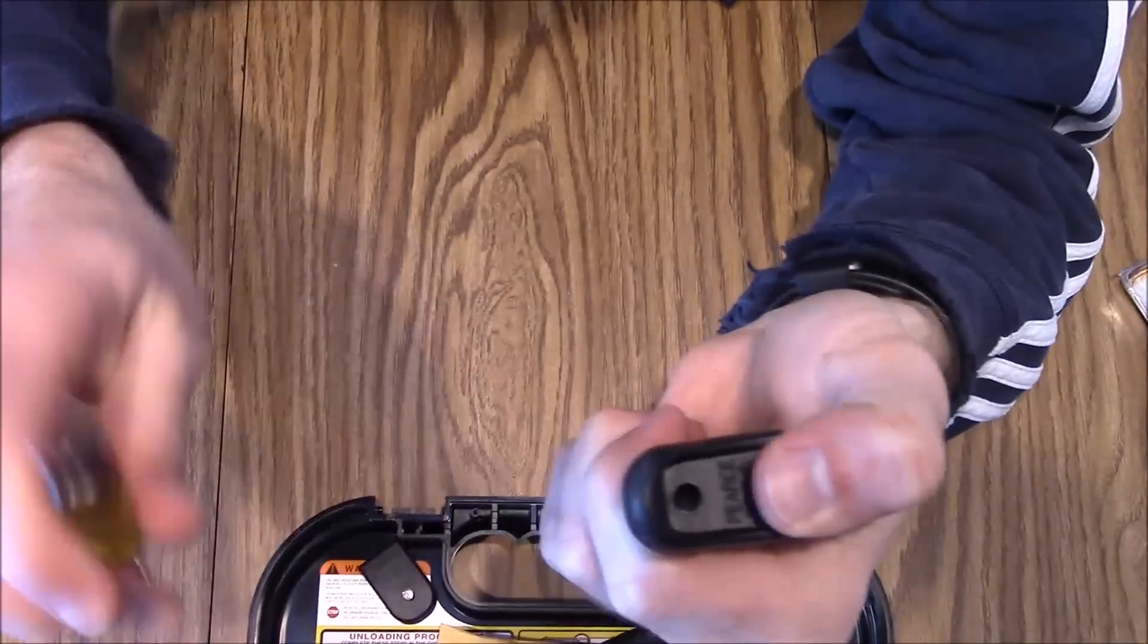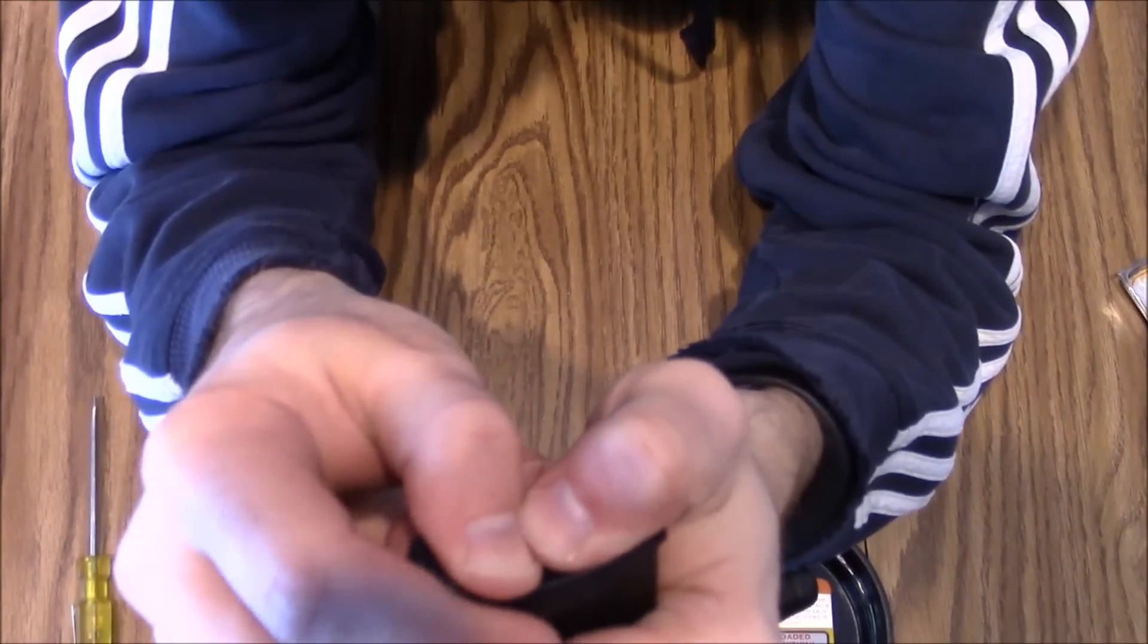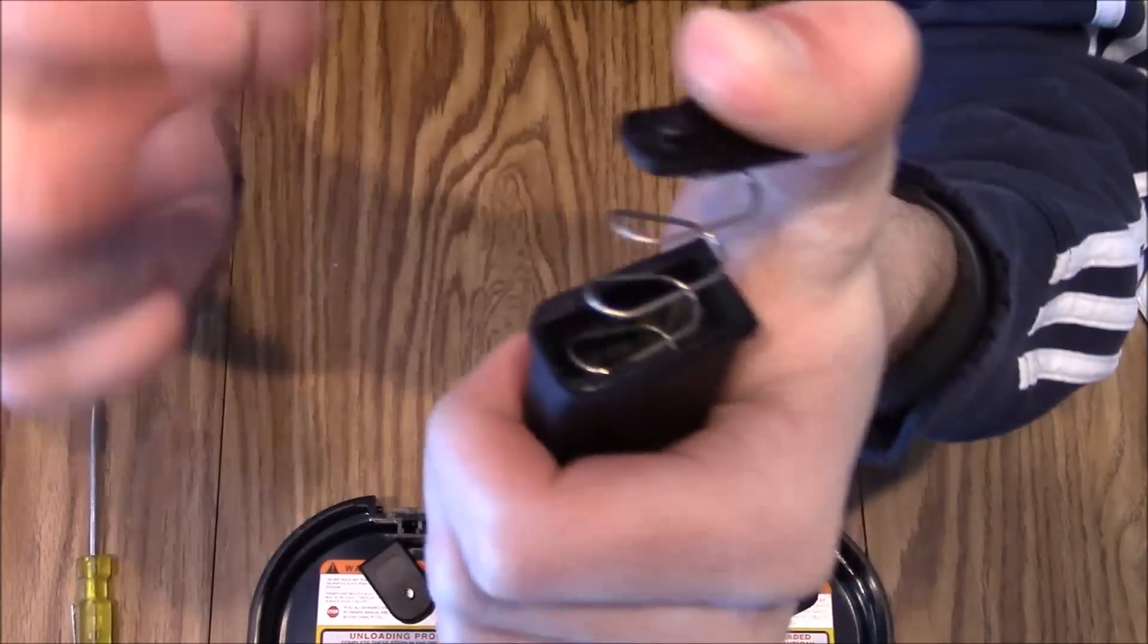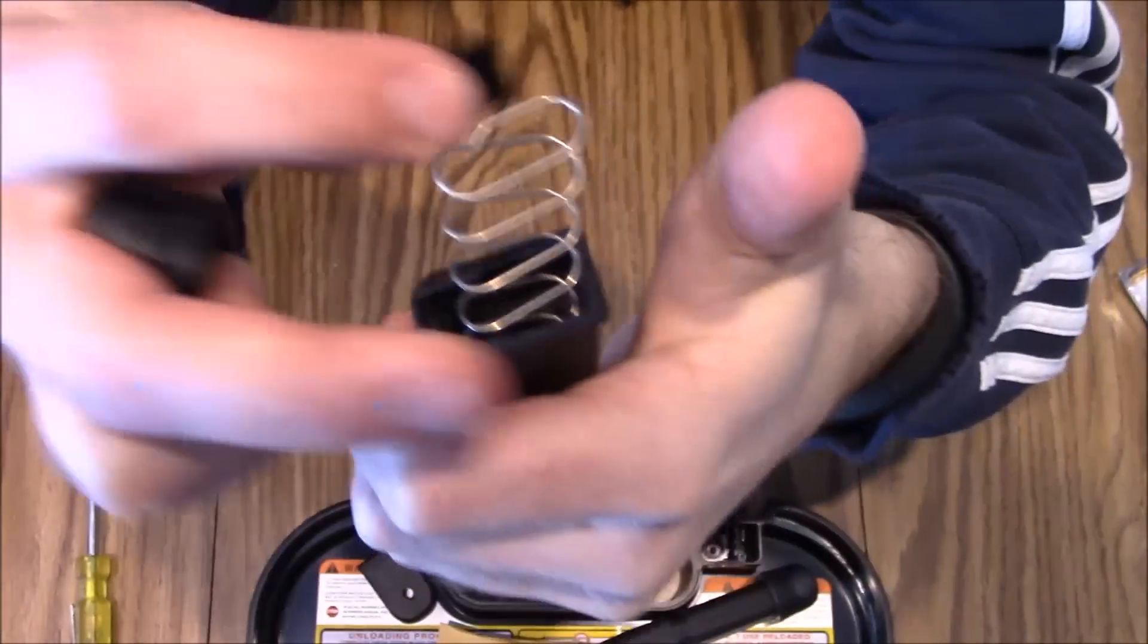With that, take the vice grips off. Pull this out, pull this out. Since we have it off of those tabs on the side, slide it off, keeping our thumb over the spring. And that's it. And there it is.